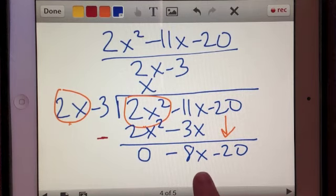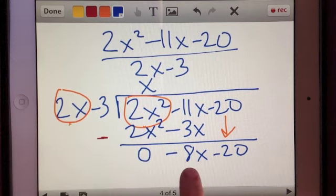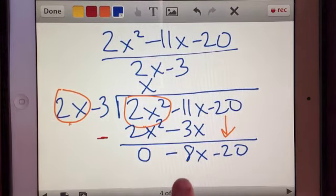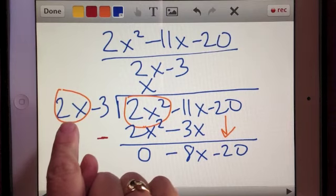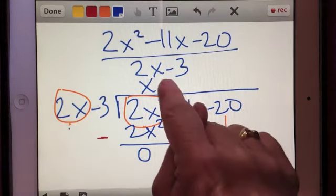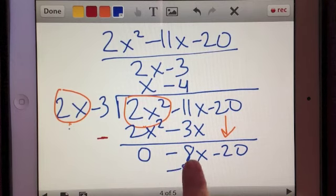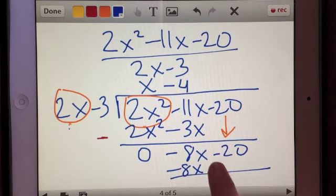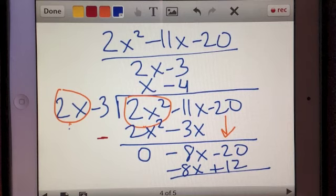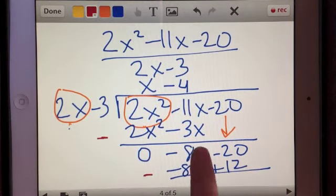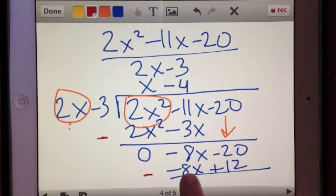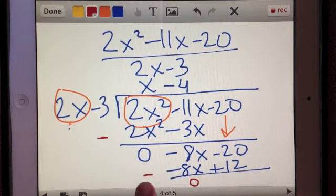And can I multiply something by 2x to get me negative 8x? And the answer in this case is yes. I know that if I multiply 2x by negative 4, I will get negative 8x. So I'm going to put minus 4. And negative 4 times 2x equals negative 8x. And negative 4 times negative 3 is positive 12. And now when I go to subtract these terms, negative 8x minus negative 8x is zero. And then negative 20 minus 12 will get me a negative 32.